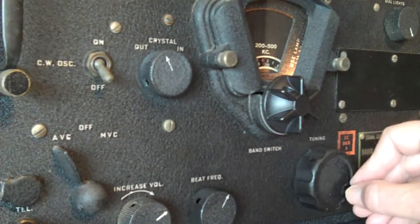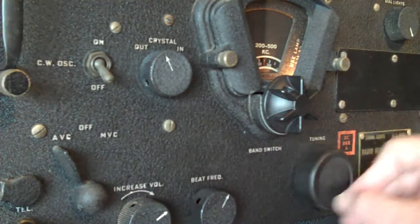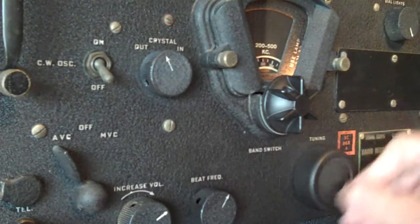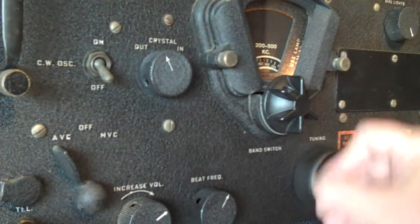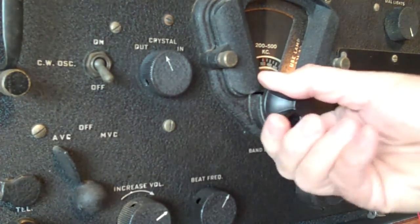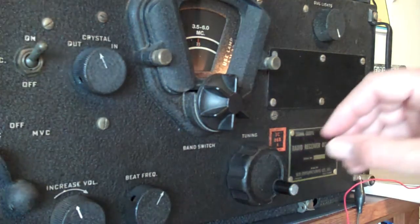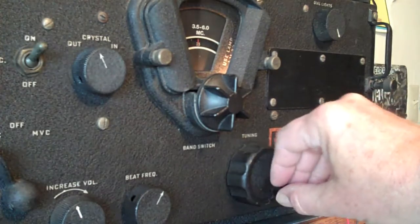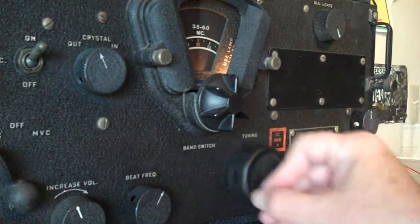Whoa, that one's real strong. Alright, okay, let's try a different band. This is 3.5 to 6.0. There are hams down here at 80 meters.